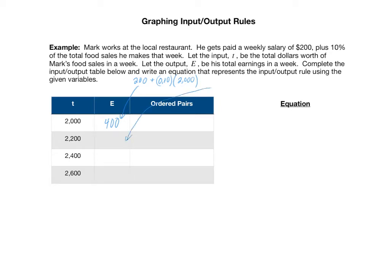What if he sold $2,200 worth of food that week? Well, he'd get paid the $200 again, plus 10% of the $2,200 worth of food sales. And 10% of $2,200 is $220. $220 plus $200 is $420. And if you go about the computation the same way, you'd get $440 here and $460 earnings if he sells $2,600 worth of food.